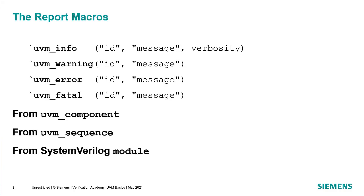The macros themselves consist of UVM_INFO, WARNING, ERROR, and FATAL — these are pretty standard severity levels. The UVM_INFO macro, in addition to the ID and the message which they all take as arguments, has the verbosity argument. These can all be called either from UVM components, from UVM sequences, or also from SystemVerilog modules, and they will all create messages that indicate what the information is and where in the system it was called from.